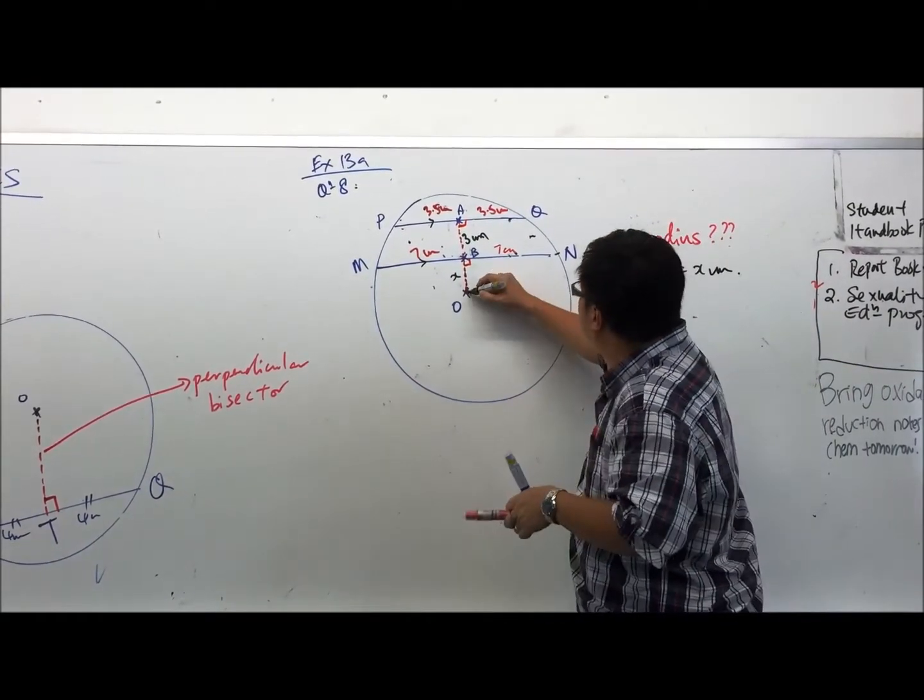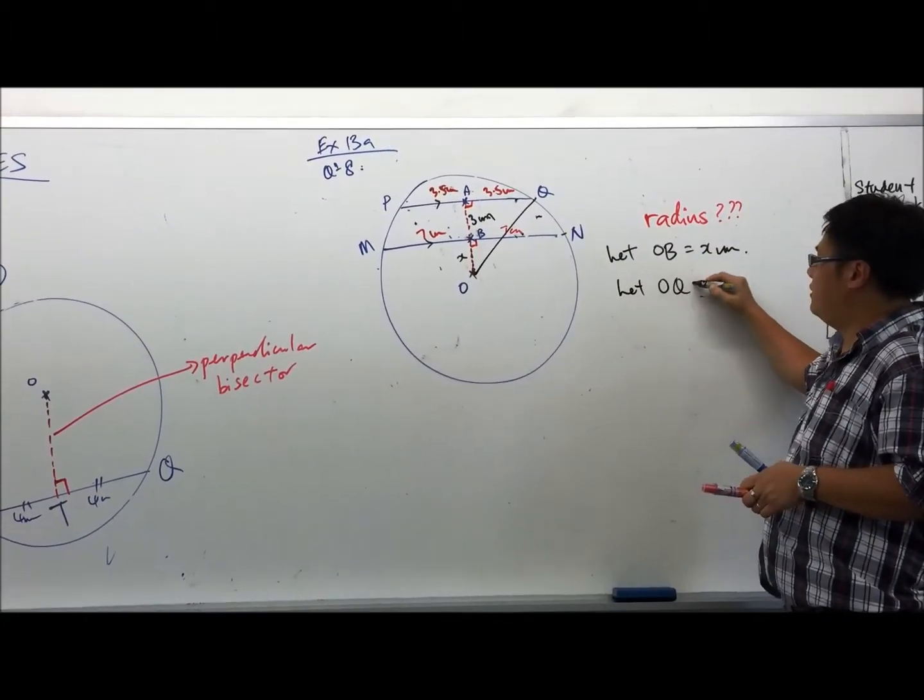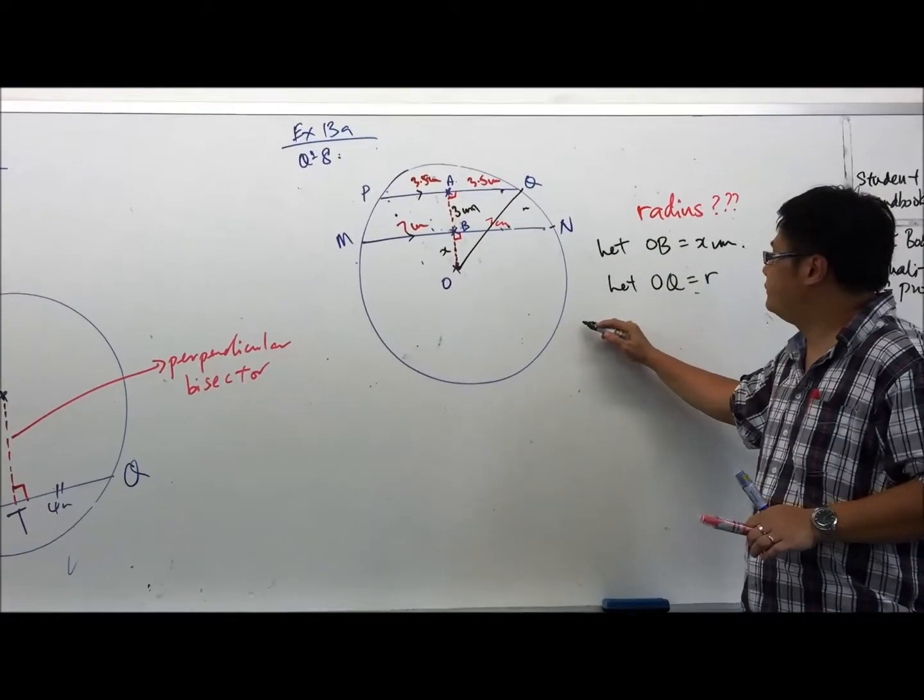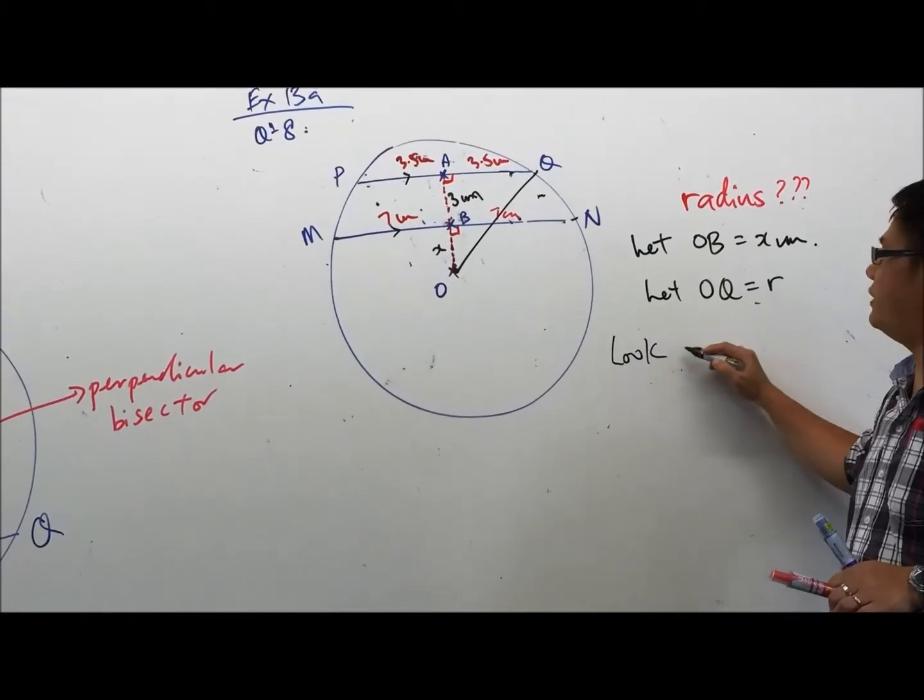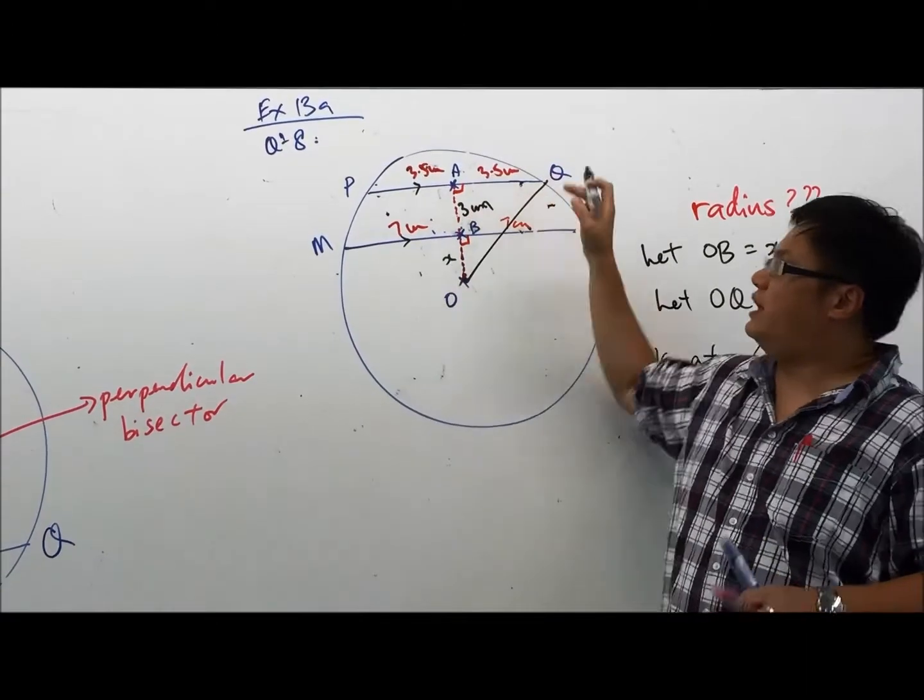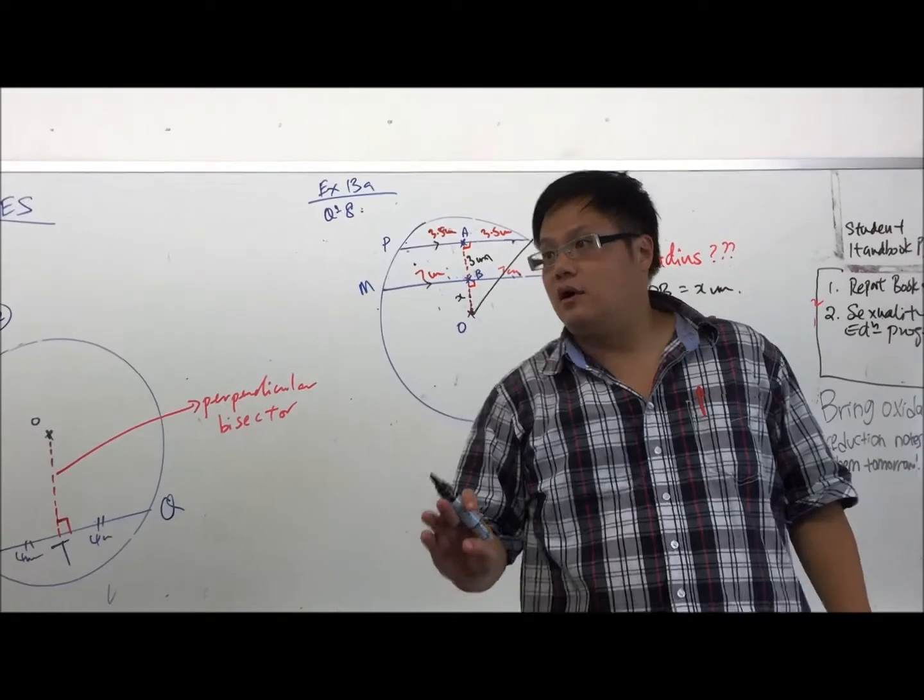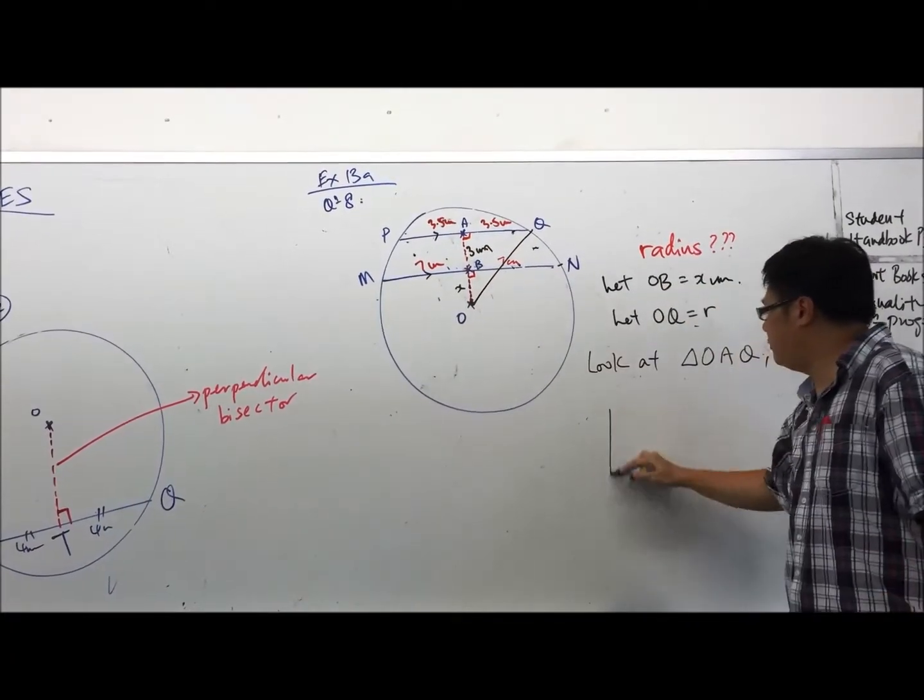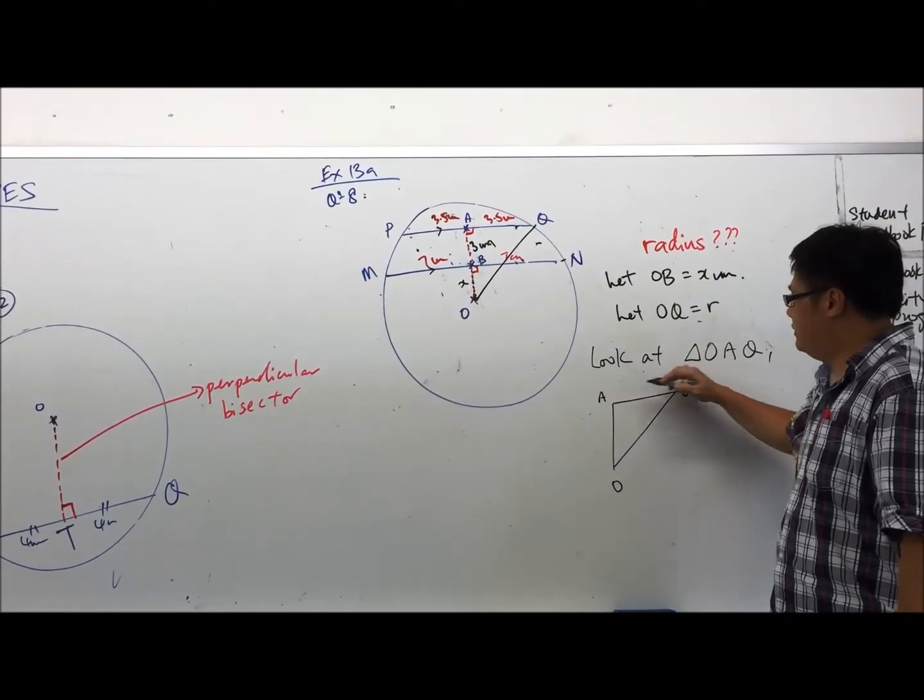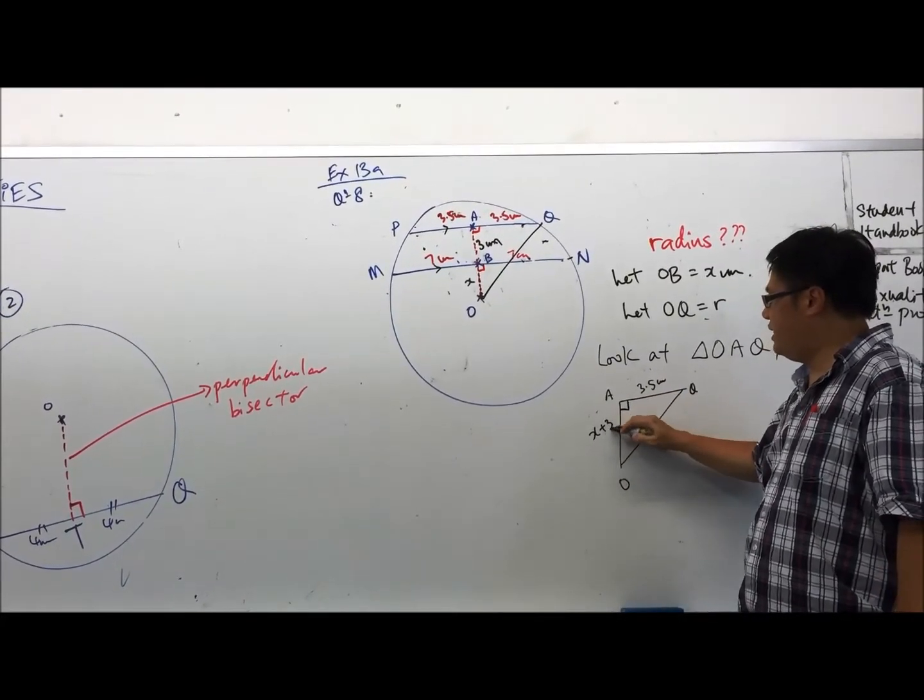If I draw one line to them, OQ now. OQ is actually, let OQ be the radius. Let's take a look at triangle OAQ now. What kind of a triangle do we have? Right angle triangle. We have, this length is actually, OAQ will look like this. This is O. This is A. This is Q. This is 3.5 cm. This is 90 degrees. OA is x plus 3. This is R.